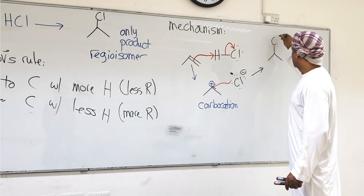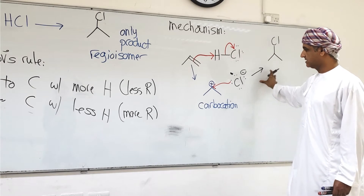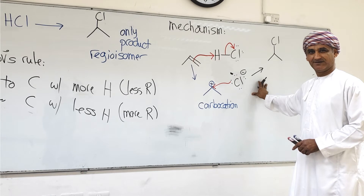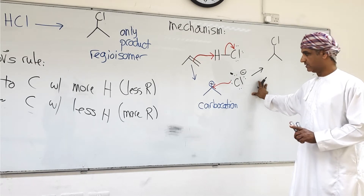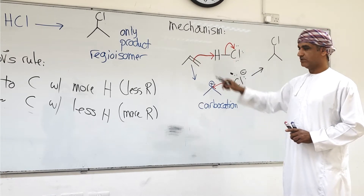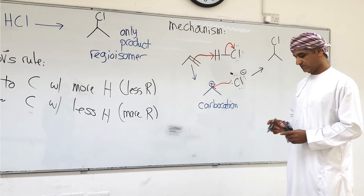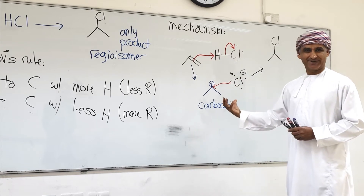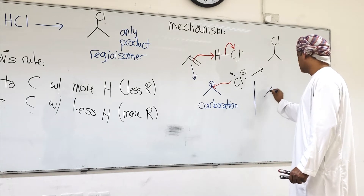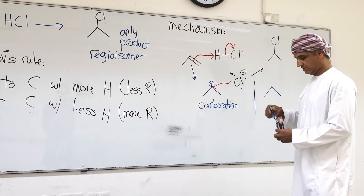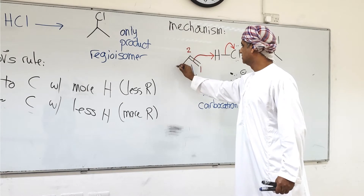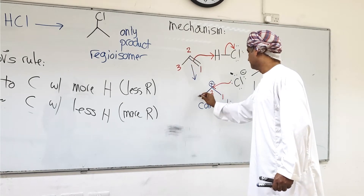This is the mechanism for this reaction. But this does not yet explain Markovnikov's rule — why doesn't hydrogen bond to carbon two? If hydrogen bonds to carbon two, we get an alternative carbocation intermediate. Let's number these carbons: one, two, three.